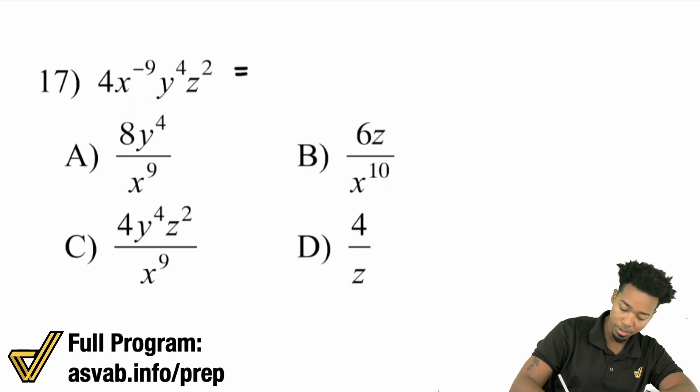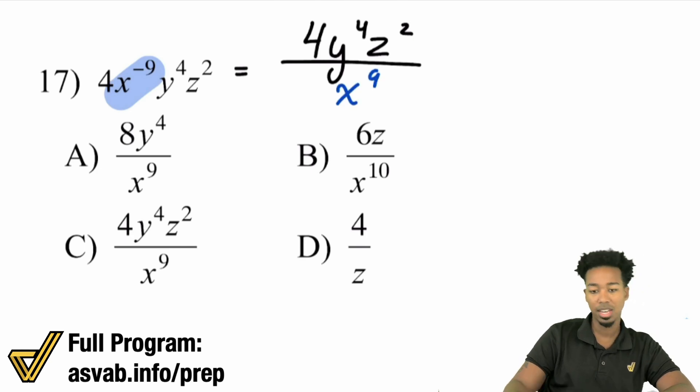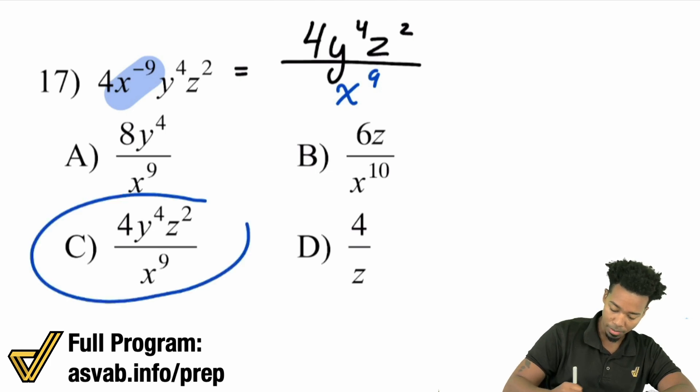So what will happen here is the four, the y to the fourth and the z squared stay exactly where they are. But that x to the power of negative nine becomes x to the power of positive nine, just like that. And so we will have ourselves the final answer of C.